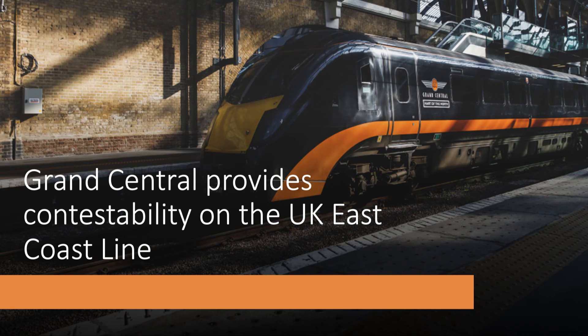A couple of examples: on the east coast line in the UK — a train line running from London all the way up to north of Scotland — LNER, London and North East Railway, technically has a monopoly on the vast majority of services on that line. But the market is contestable to a degree because Grand Central is also given an access operating licence, and they can fill in some of the gaps in the timetable to provide some competing train operating services. Grand Central often provides those little off-peak services that fill gaps in the timetable, making the market more contestable.